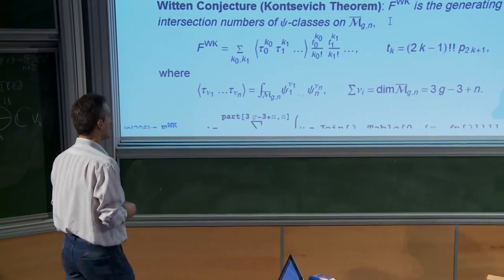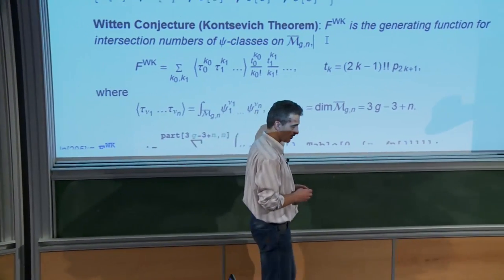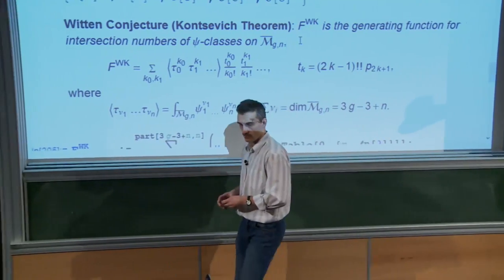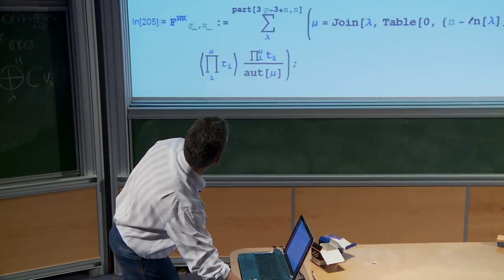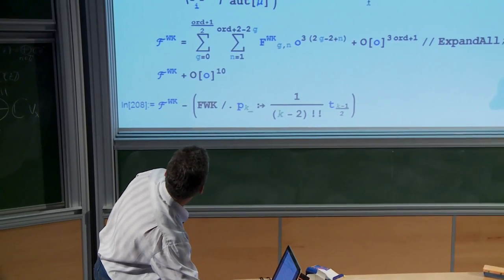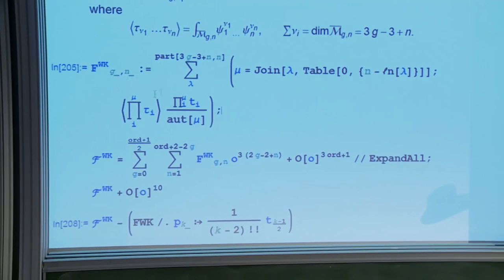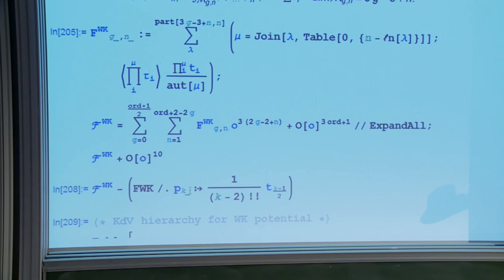At the time when Kontsevich proved the conjecture, the ELSV formula was not yet known; it appeared slightly later. Using the ELSV formula we can now do this directly. Here I checked the conjecture: I have an implementation of intersection numbers. The right-hand side uses the exponential of the Hurwitz function expressed via the fermionic representation. Let me compare. The result agrees. The implementation uses the Virasoro constraints which are a consequence of the Witten conjecture, so this is largely a demonstration rather than an independent verification.